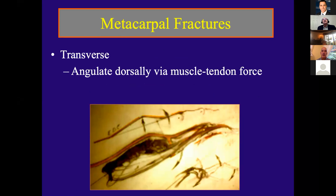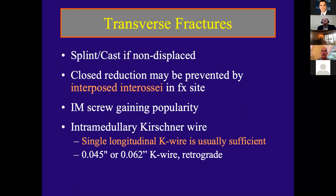Metacarpal transverse fractures almost always angulate dorsally — the strong flexor tendons flex the metacarpal head down, as shown in Dr. Littler's diagram. They are treated with a cast or splint if non-displaced. One important thing to remember is that interossei can be interposed within the fracture site, so if closed reduction cannot be obtained, you need to suspect interossei muscle or fascia within the fracture site and may need to open it. Treatment involves either an IM screw or an intramedullary K-wire — 0.045 inches for a smaller hand or 0.062 for a bigger hand.